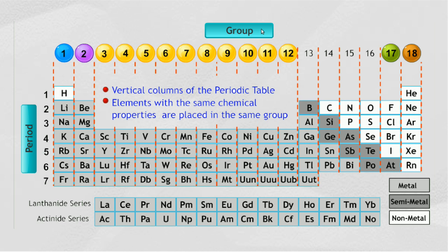Each vertical column is called a group in the periodic table. There are 18 groups in the periodic table which are given numbers 1 to 18.